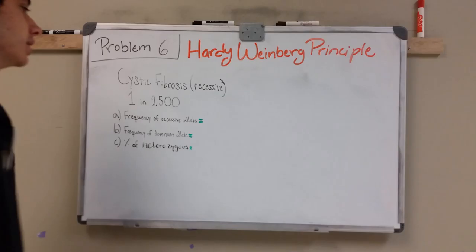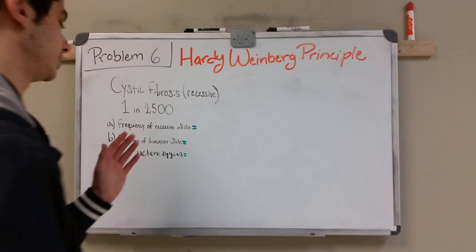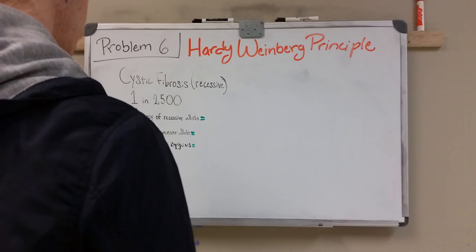And then in this problem we get a question about cystic fibrosis and it tells us that one in 2,500 people has cystic fibrosis. So it's telling us to calculate the frequency of recessive allele, frequency of dominant allele, and the percent of heterozygous.